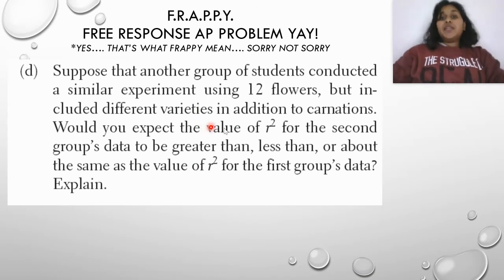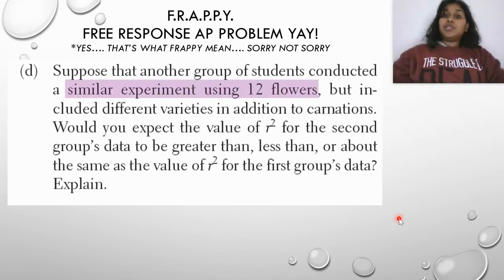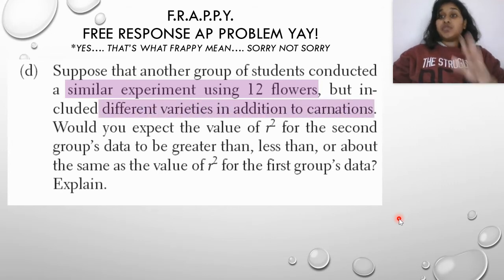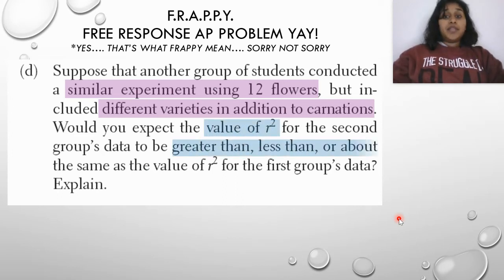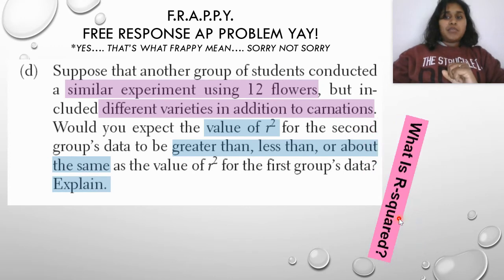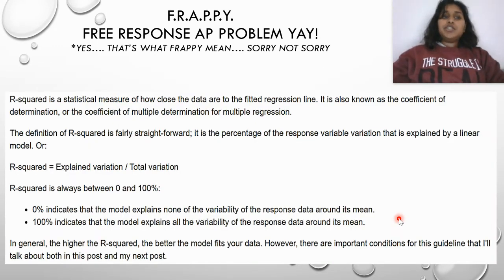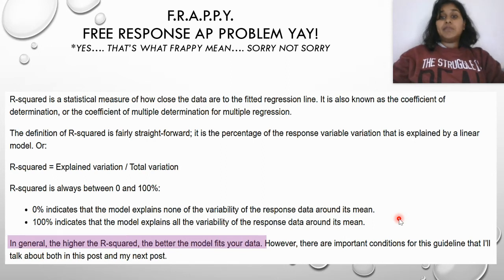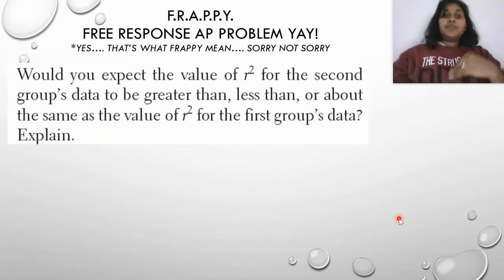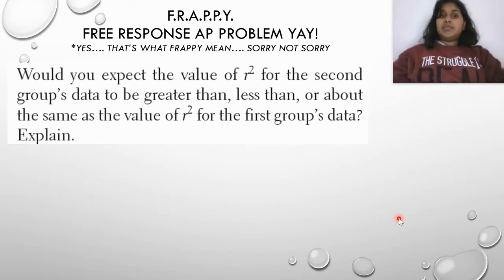Suppose another group of students conducted a similar experiment using twelve hours but included different varieties in addition to carnations. Would you expect the value of R-squared for the second group's data to be greater than, less than, or about the same as the value of R-squared for the first group's data? First and foremost, what is R-squared? The biggest thing I want you to take away is that the higher the R-squared, the better the model fits your data. So how closely does my data fit the line for the second group?